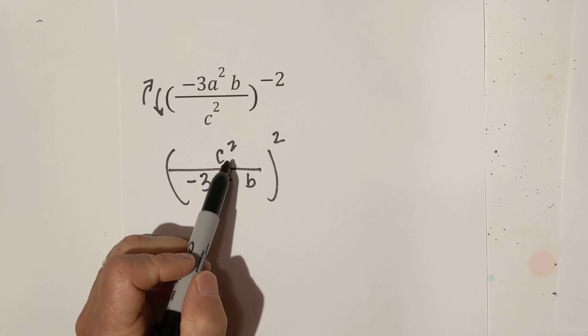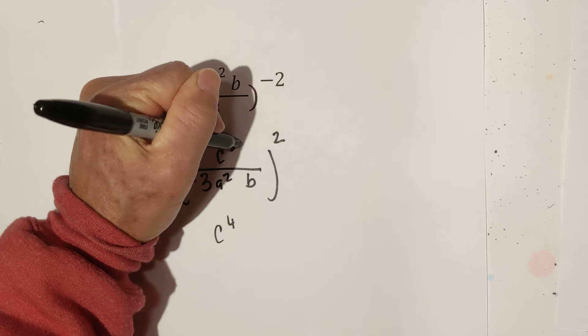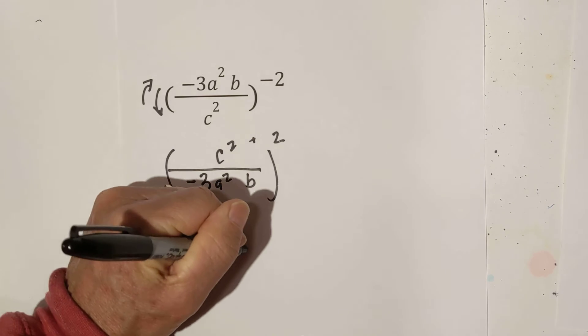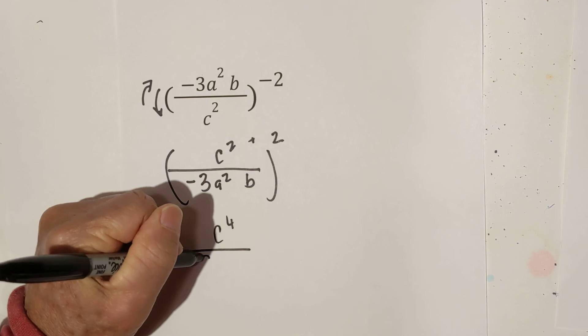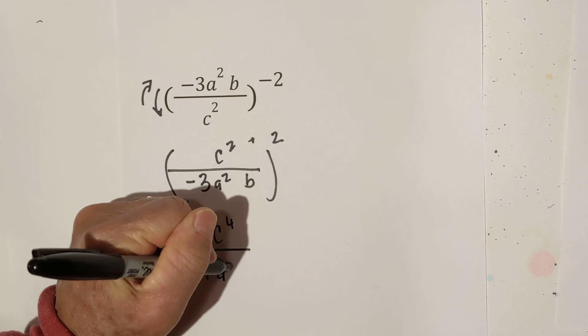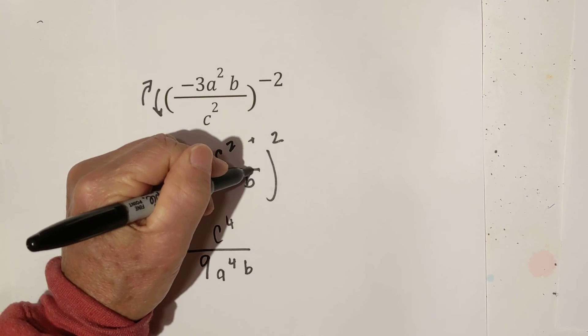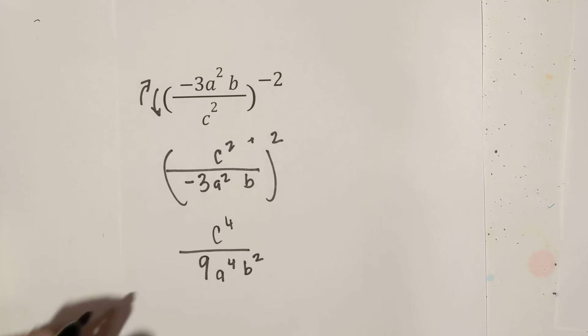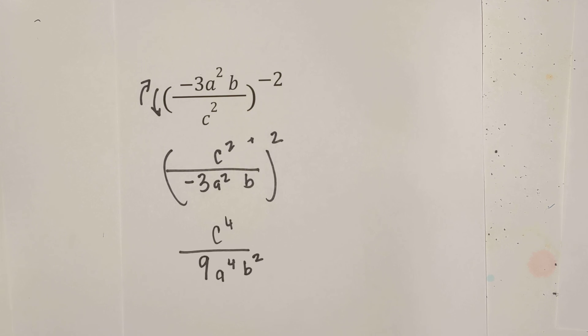So now let's just apply the rules. We add these two exponents. So this will be c to the fourth, because 2 plus 2 is 4. Now we're going to square this negative 3. That will become a 9. We're going to add exponents here. a, 2 plus 2 is 4. And then b, technically it has a 1 there. 1 plus 2 is, we don't have anything there. So that will become squared. So that's what it looks like rewritten applying the negative exponent rule.